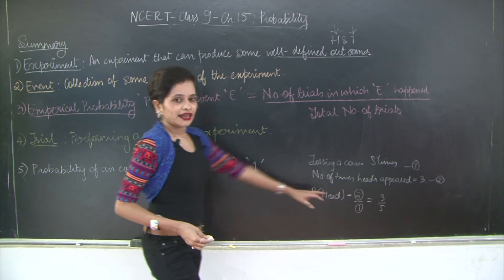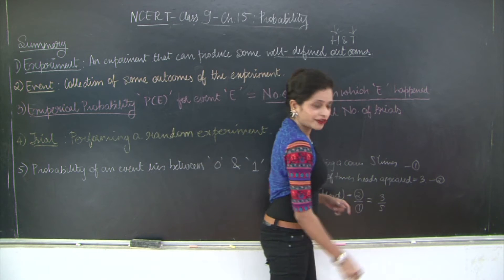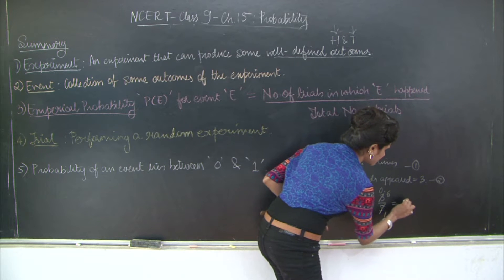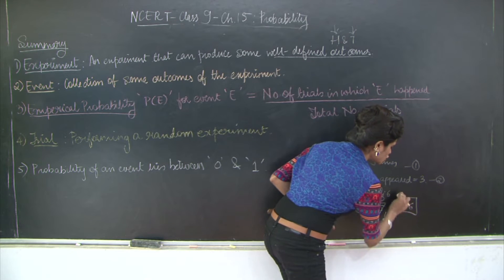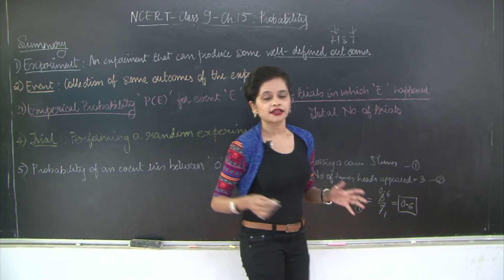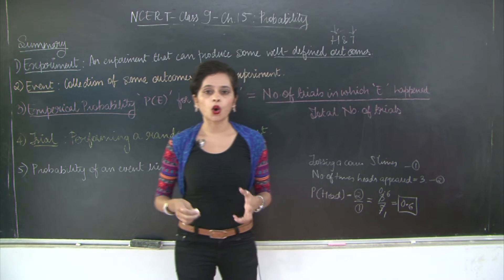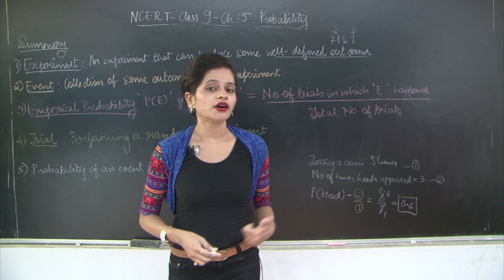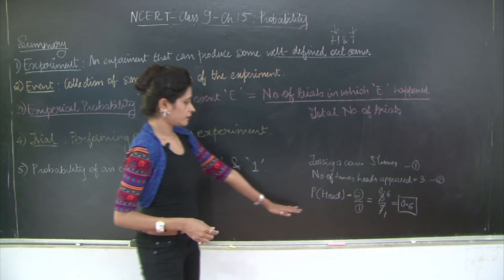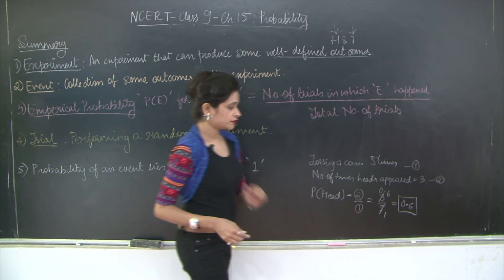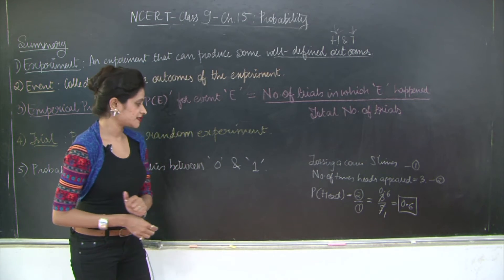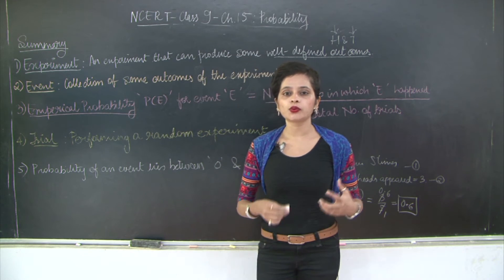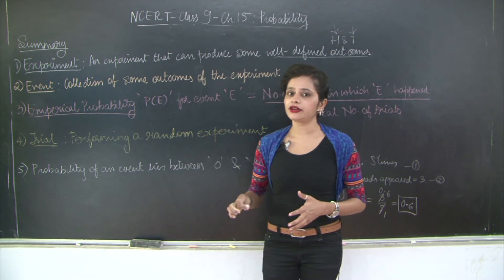And let's see the value of 3 upon 5. It's going to be 5 ones are 5, 5 sixes are 30, 0.6. So please note that the probability of an event will always lie between 0 and 1. It will be greater than 0 and less than 1. This is an example of the same. And the sum of the probabilities of all the events performed for an experiment will always be 1. It will never be greater than 1.